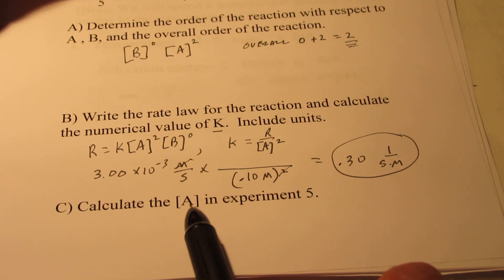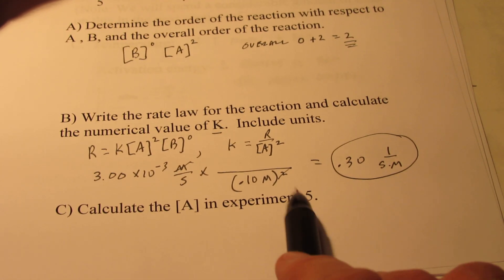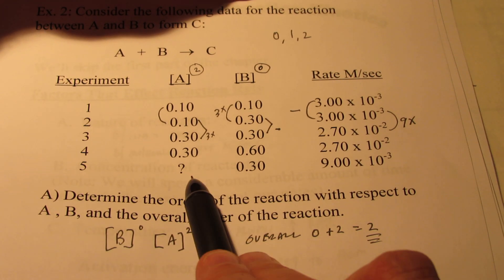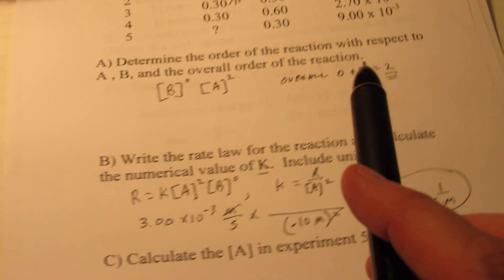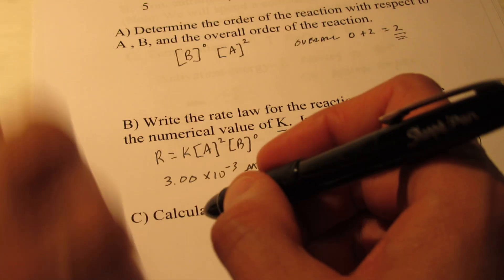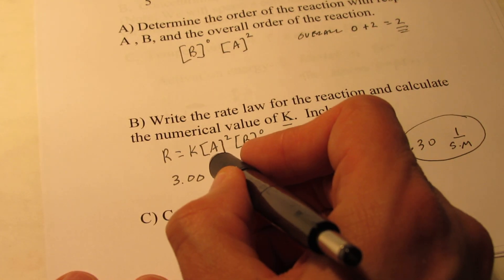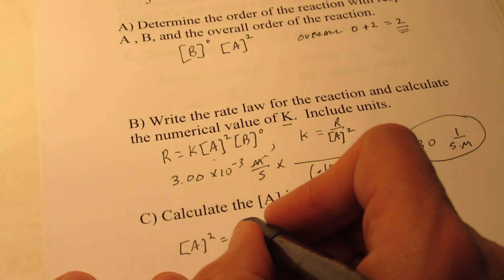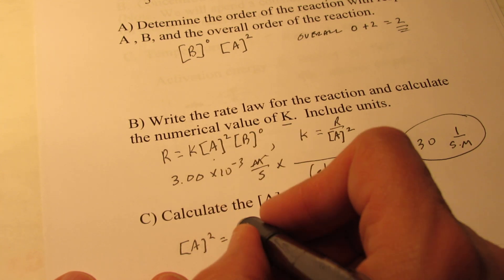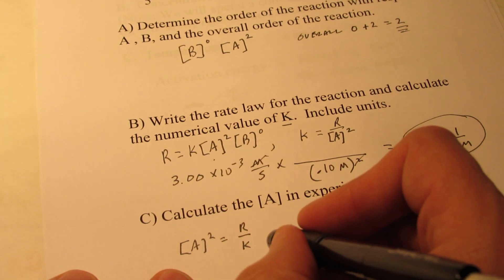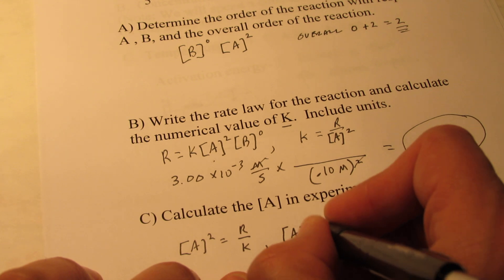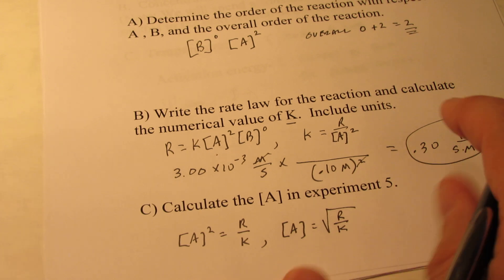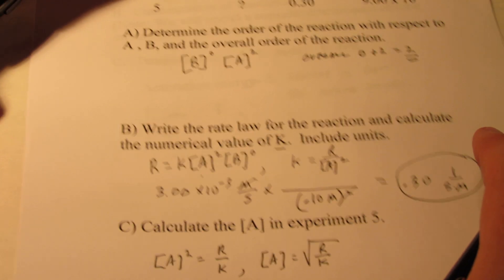Now let's calculate the concentration of A during experiment five. So in experiment five we know the rate, the concentration of B, but we don't know the concentration of A. So here we go. If we use our rate law and solve this for A, we know that A squared would be, let's see, if I'm solving for A squared, wouldn't that be R over K? But if I want just A, wouldn't that be the square root of the rate over K? True story?